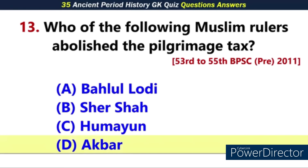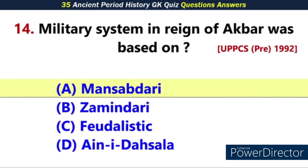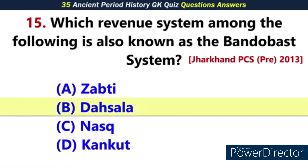Q13. Who among the following Muslim rulers abolished the pilgrimage tax? Answer: D. Q14. The military system during the reign of Akbar was based on — Answer: A. Mansabdari system. Q15. Which revenue system among the following is also known as the Ain-i-Dahsala system? Answer: B. Dasala.